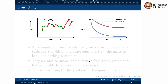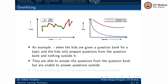Let's look at overfitting with a general scenario using our example of kids giving exams. Overfitting in this context is when kids are given a question bank and instead of studying any other parts of the syllabus, they only prepare questions from the question bank. They will be able to answer questions only from the question bank, but if you ask any question outside it, they may fail. This is like overfitting to the question bank.